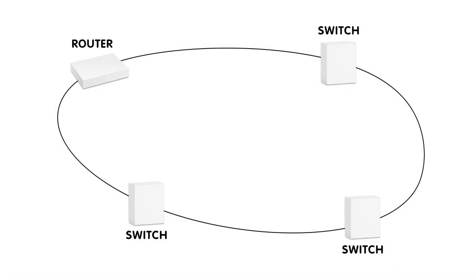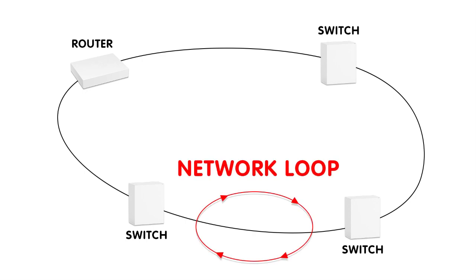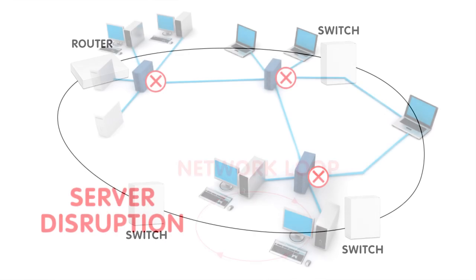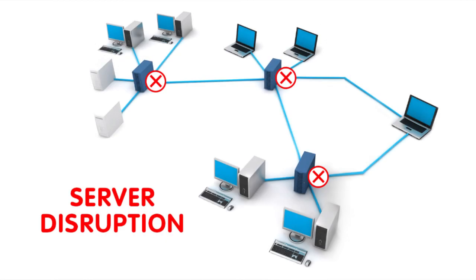In a complex network environment where multiple switches or interconnected devices are present, the risks of network loops can arise. These loops can lead to broadcast storms and network congestion, causing severe disruption to data transmission and overall network performance.